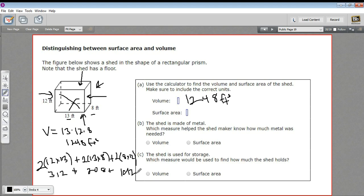Now we need to add all those pieces together: 192 plus 208 plus 312. And I'm getting 712. Now this is area, so it's square feet. All right, so we've done our calculations. Let's see if we can answer these questions.